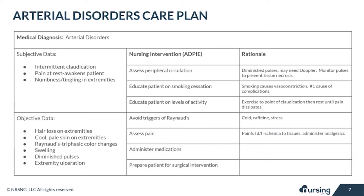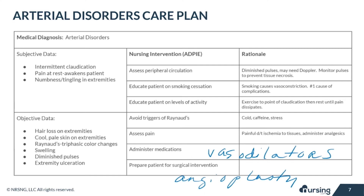In addition to analgesics, the patient may also be ordered vasodilators to open up the vessels to improve blood flow or calcium channel blockers to act on smooth muscle to prevent vasospasms. In some serious situations, a surgical intervention like bypass grafting, angioplasty, endarterectomy, and sympathectomy may be necessary.